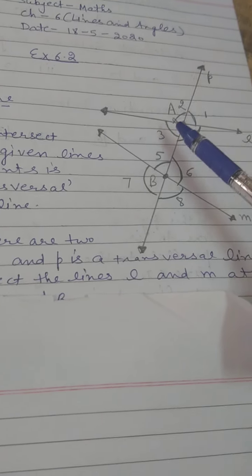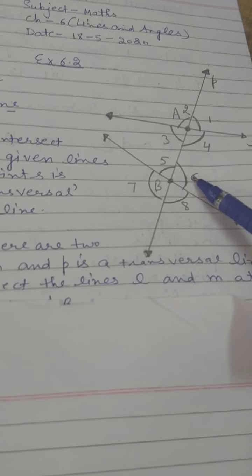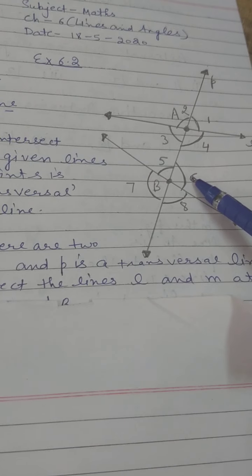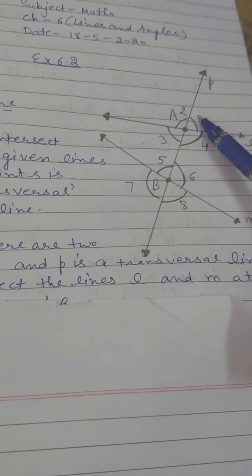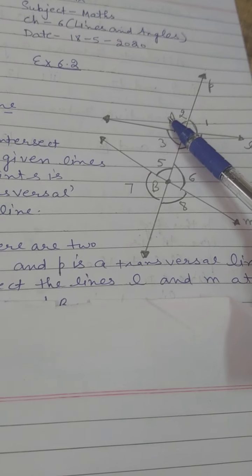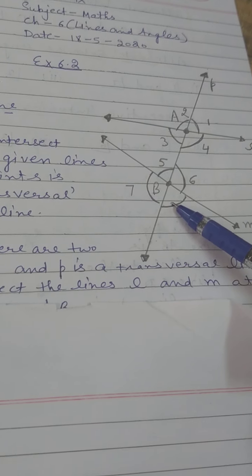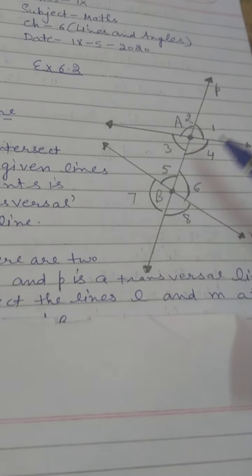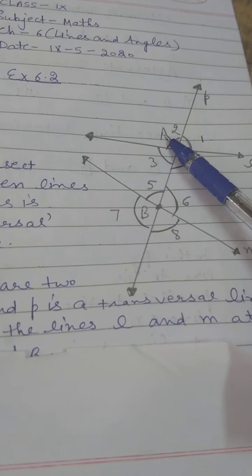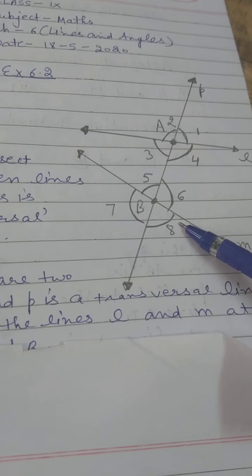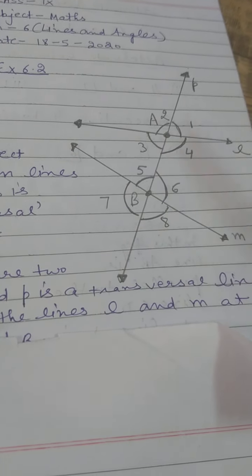To repeat: angles 3, 4, 5, and 6 are called interior angles. Angles 1, 2, 7, and 8 are called exterior angles.